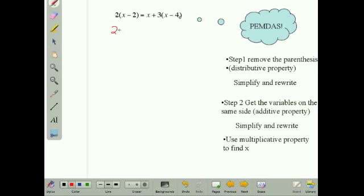2 times x is 2x. 2 times negative 2 is a negative 4. I bring everything else down now. I've got another set of parentheses. I can't combine anything inside, but immediately to the outside I'm being asked to multiply.